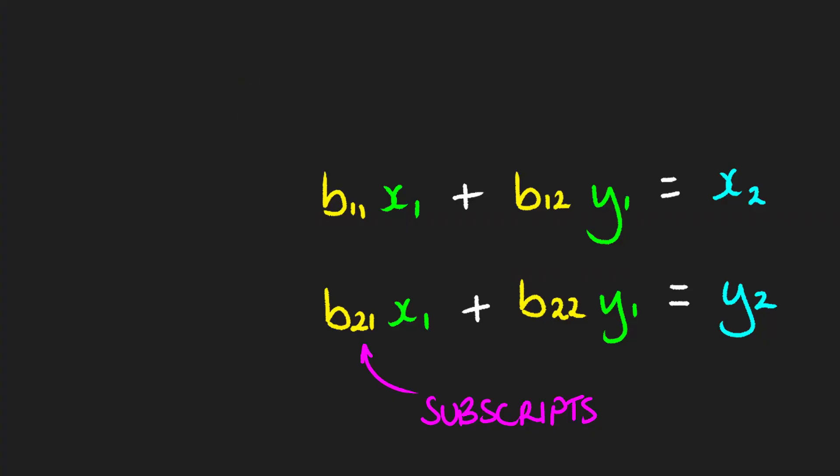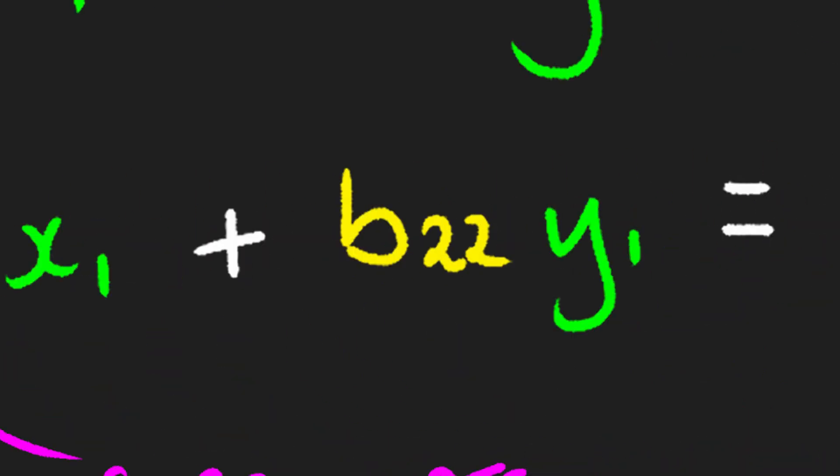Now, although the subscripts of the coefficients of the variables might throw you off a little bit, they will become very obvious as to why they're 1, 1, 1, 2, 2, 1, 2, 2 in due course when we start putting it into matrix form.